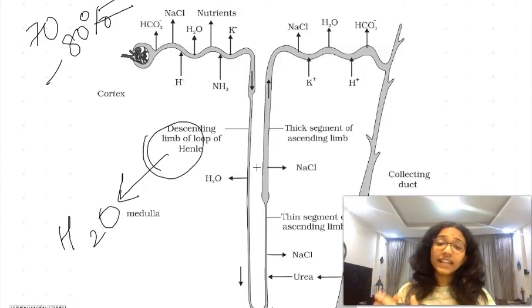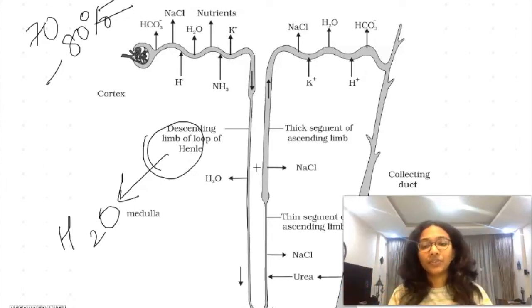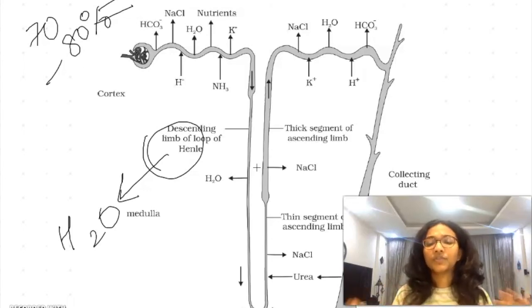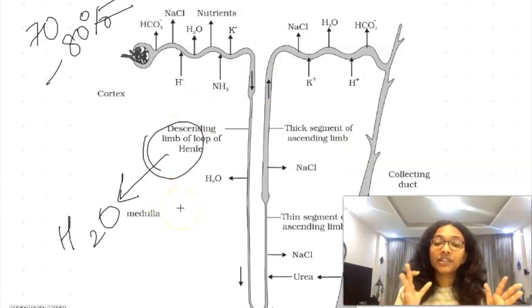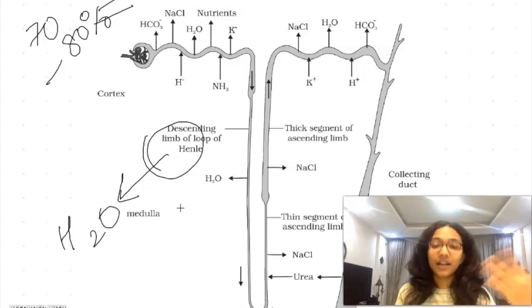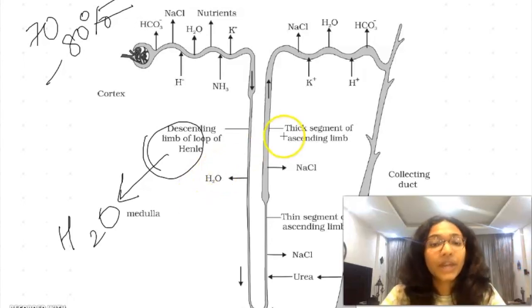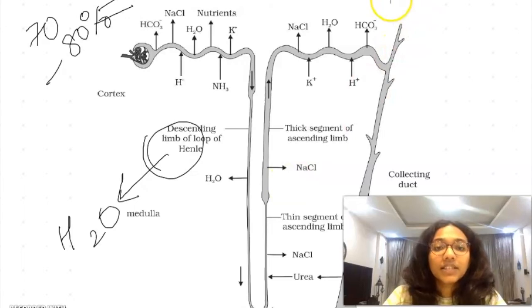Ascending loop is completely opposite. Ascending loop of Henle is impermeable to water and permeable to electrolytes. Whatever water went out is out now, so this ascending loop is impermeable to water, so all the electrolytes come out of it, like sodium. Loop of Henle is where major part of filtration takes place because water goes out. Water is the main constituent of blood, so major part of it goes out, reducing the volume to a large extent.